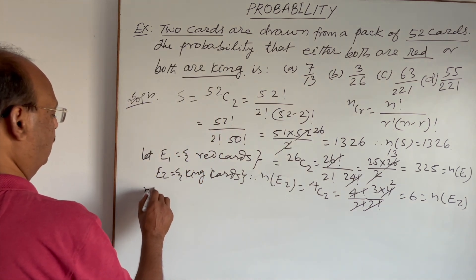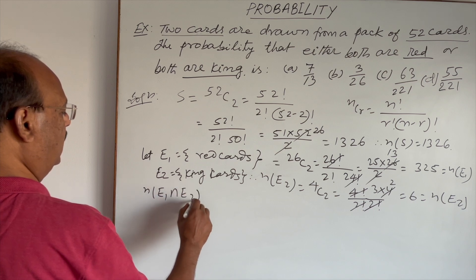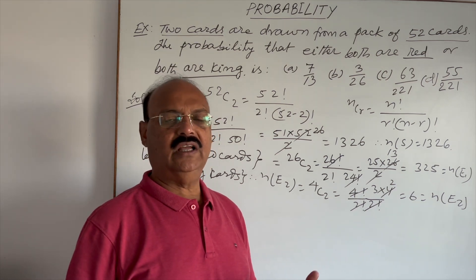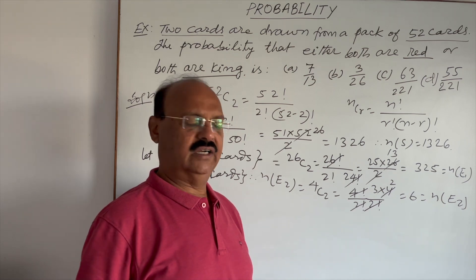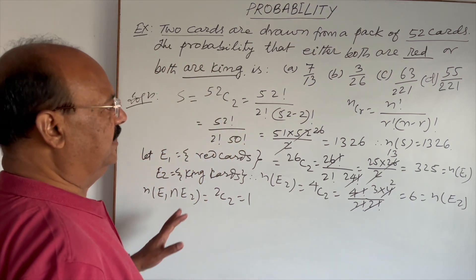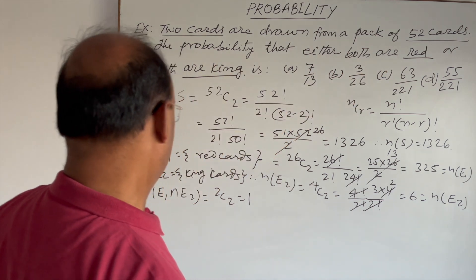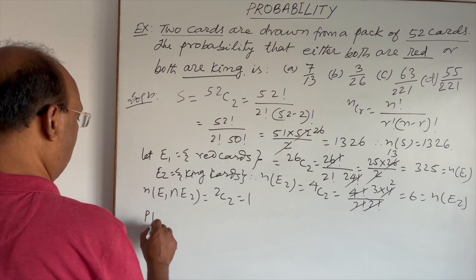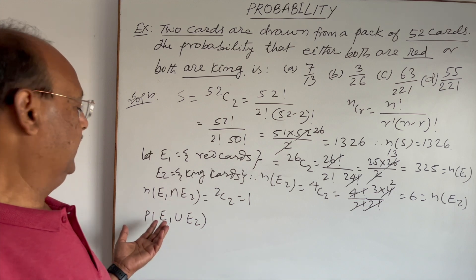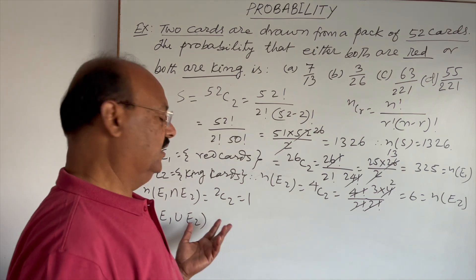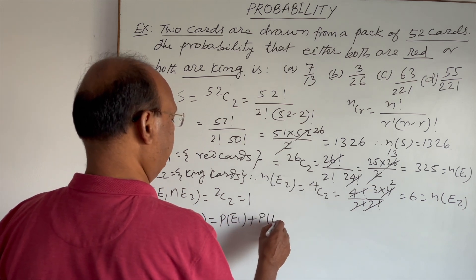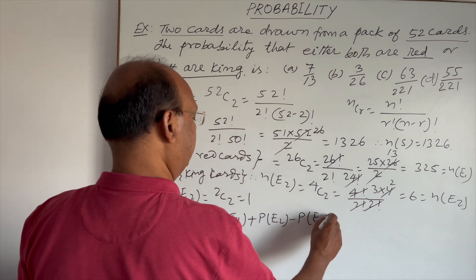Now we find n(E1 ∩ E2), meaning both cards are red as well as king. There are 2 kings that are red cards, so this is 2C2 = 1. For finding the probability that both cards are either red or king, we use P(E1 ∪ E2) = P(E1) + P(E2) − P(E1 ∩ E2).